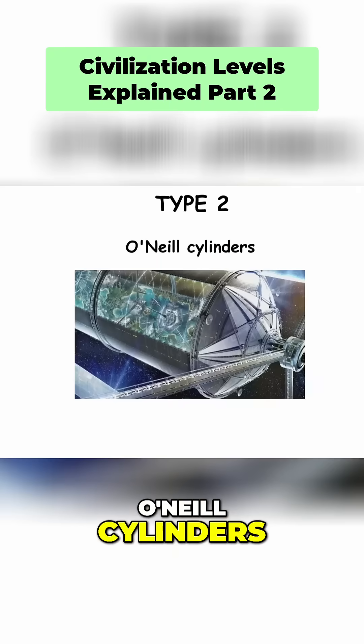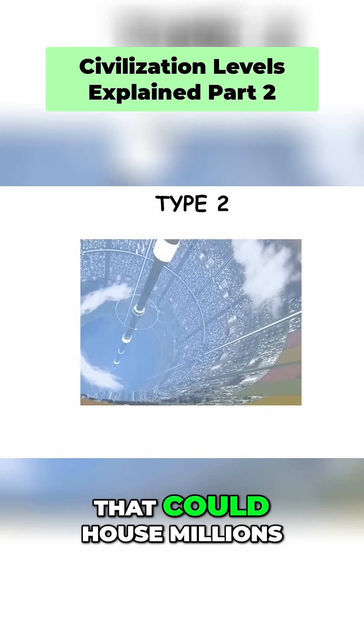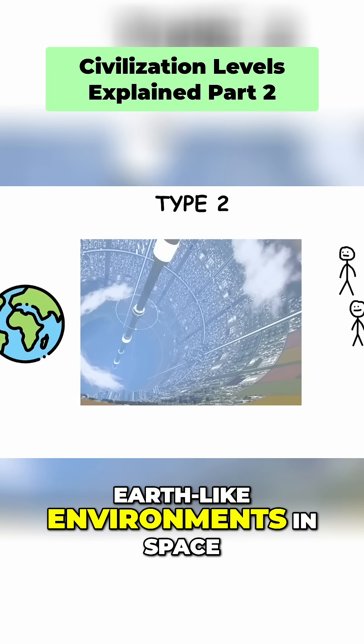People would live in O'Neill Cylinders, a rotating space habitat that could house millions of people and create Earth-like environments in space.